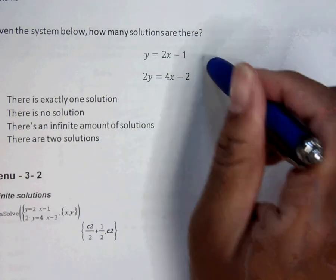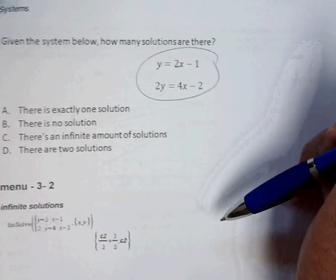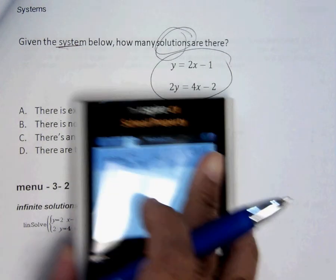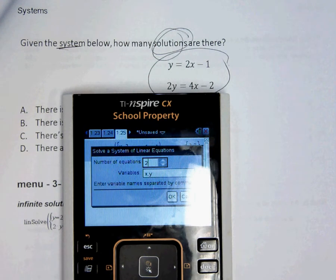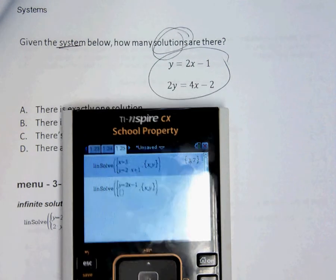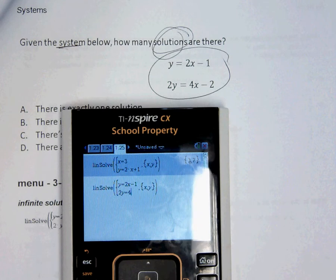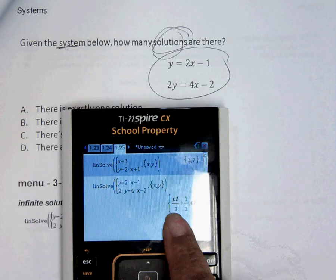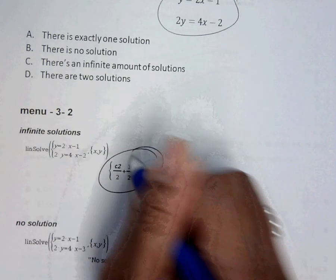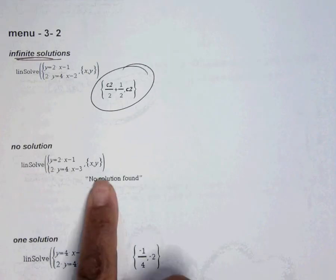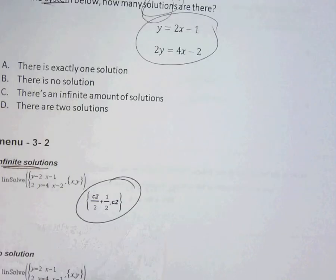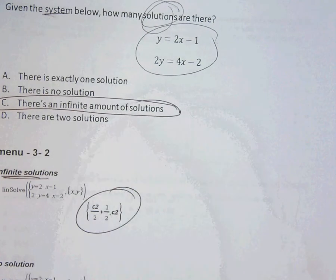Which answer choice describes these two equations? So given the system below, how many solutions are there? So we can do the same thing. Press enter. So y equals 2x minus 1, and 2y equals 4x minus 2. And it gives me the c's in the answer. And remember, we talked about that. When it gives you c's, it means infinite.